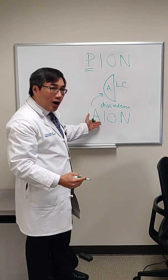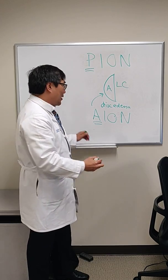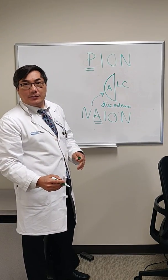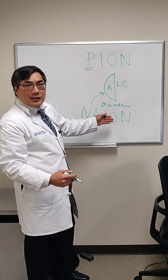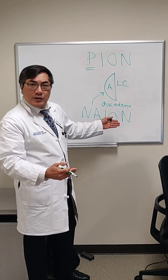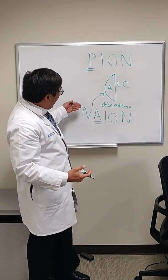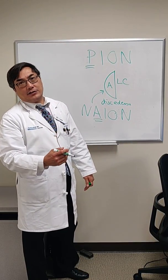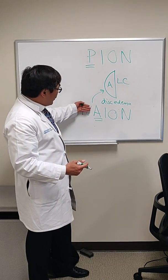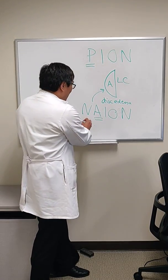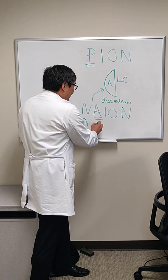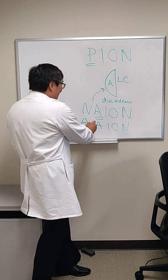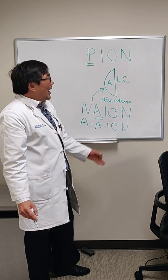The most common cause of anterior ischemic optic neuropathy is non-arteritic anterior ischemic optic neuropathy. An acute unilateral loss of vision in an elderly patient with vasculopathic risk factors, an RAPD, and a swollen disc is very likely to be non-arteritic anterior ischemic optic neuropathy. But in every patient with anterior ischemic optic neuropathy, we want to make sure it's not arteritic anterior ischemic optic neuropathy — AAION.